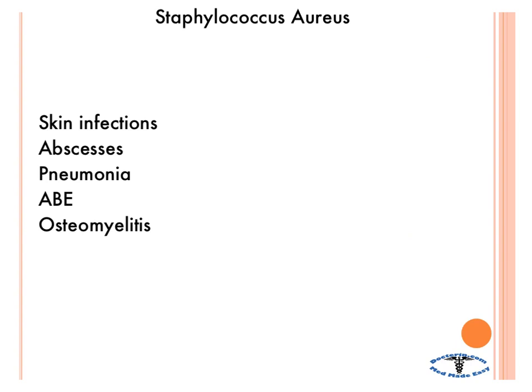Now let's go through the diseases Staphylococcus aureus causes. First are skin infections — it causes impetigo, cellulitis, and a whole slew of skin infections. You also get abscesses in different organs, like the liver. If you have a bacteremia with Staph aureus, it can deposit in any organ and cause an abscess there. And you can get pneumonia in the lung if you aspirate it — for example, in someone who is bedridden and whose swallowing mechanisms are deteriorating.